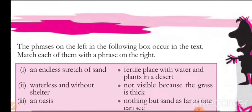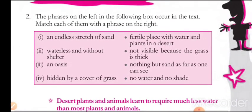The next exercise: The phrases on the left in the following box occur in the text — match each of them with a phrase on the right. Number one: 'an endless stretch of sand' can be matched with 'nothing but sand as far as one can see.' Number two: 'waterless and without shelter' can be matched with 'no water and no shade.' Number three: 'an oasis' matches 'fertile place with water and plants in a desert.' And 'hidden by a cover of grass' matches 'not visible because the grass is thick.'